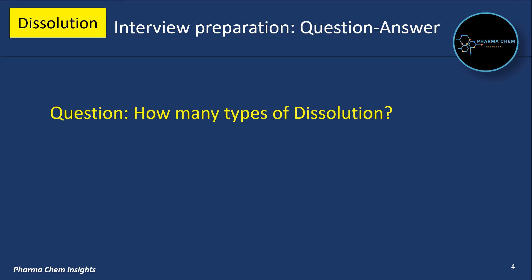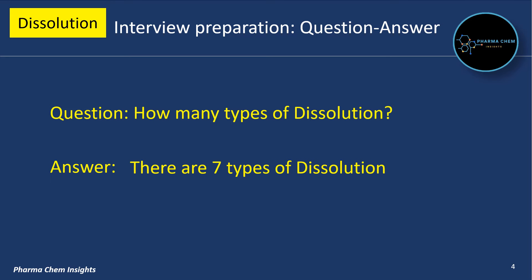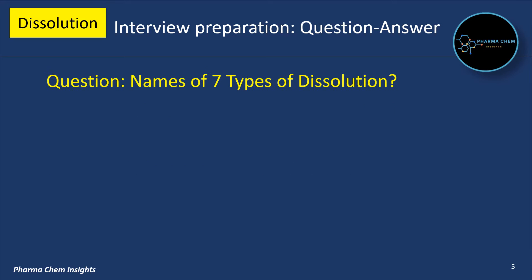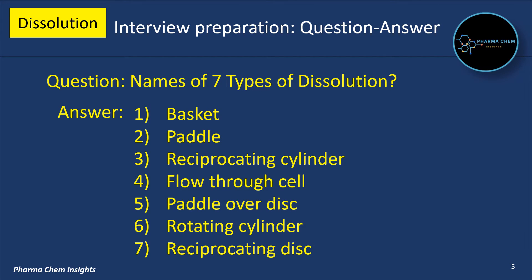How many types of dissolution are there? There are 7 types of dissolution. First is basket. Second is paddle. Third is reciprocating cylinder. Fourth is flow-through cell. Fifth is paddle over disc. Sixth is rotating cylinder. Seventh is reciprocating disc.